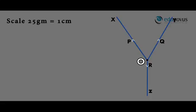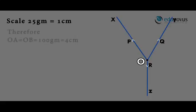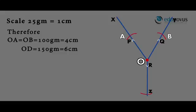Let us consider a scale of 25 grams equal to 1 centimeter. Therefore, OA is equal to OB is equal to 100 grams, which is 4 centimeters. OD is equal to 150 grams, which is 6 centimeters. Draw arcs from point O on all three forces P, Q and R with their corresponding values and mark them as A, B and D.